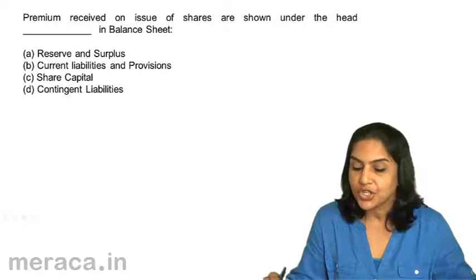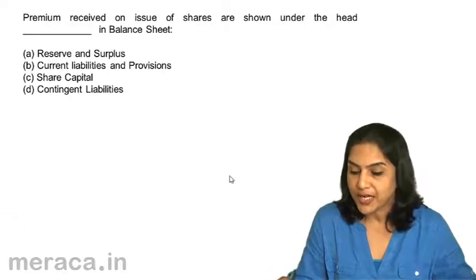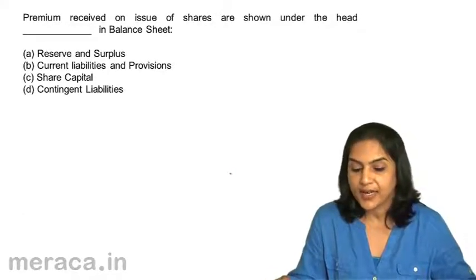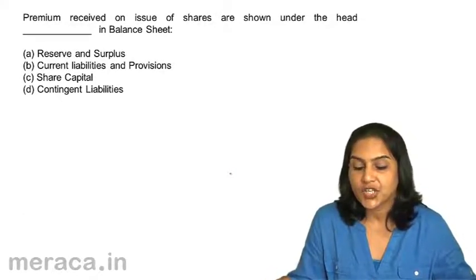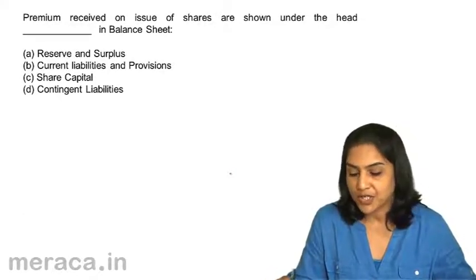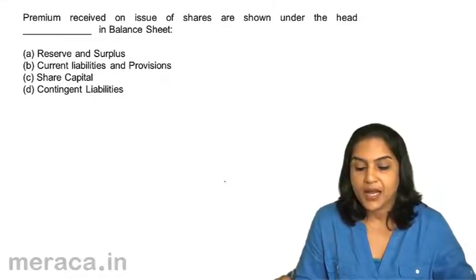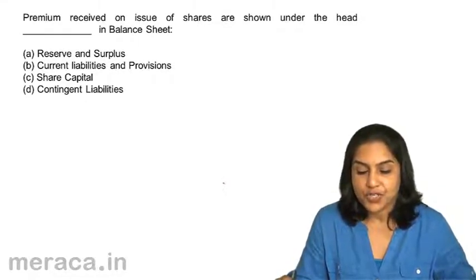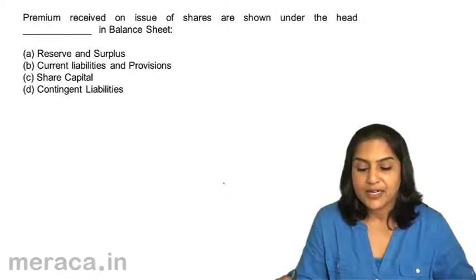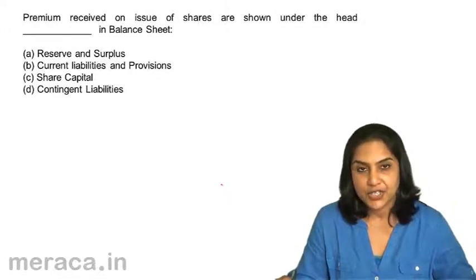Next. Premium received on issue of shares are shown under the head dash in the balance sheet. A. Reserves and Surplus. B. Current Liabilities and Provisions. C. Share Capital. D. Contingent Liabilities.